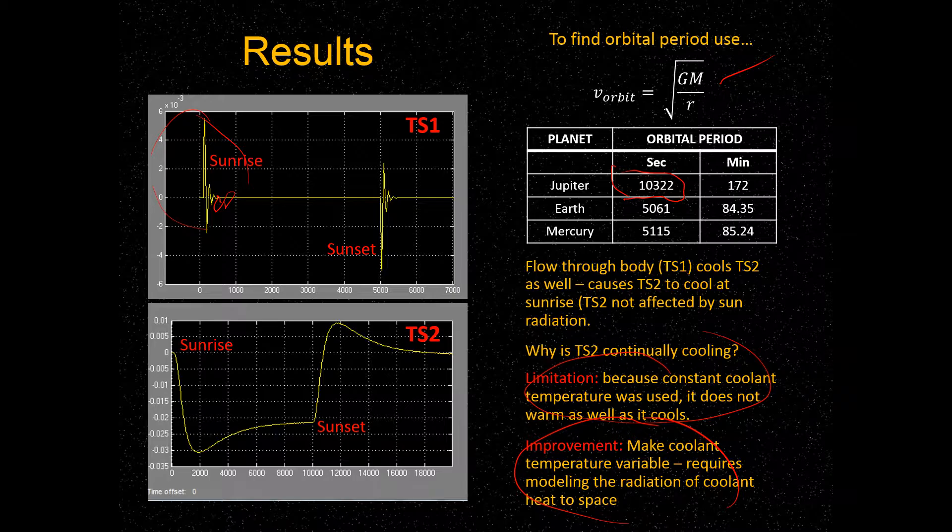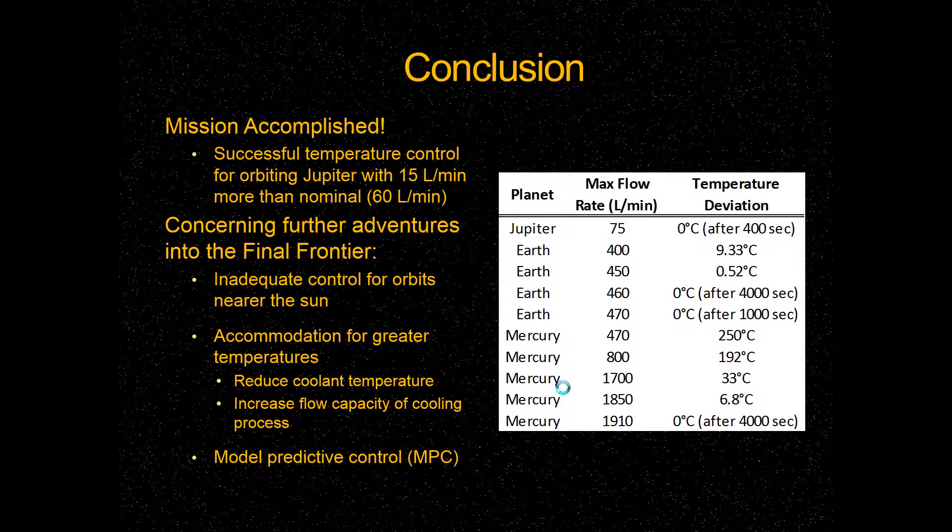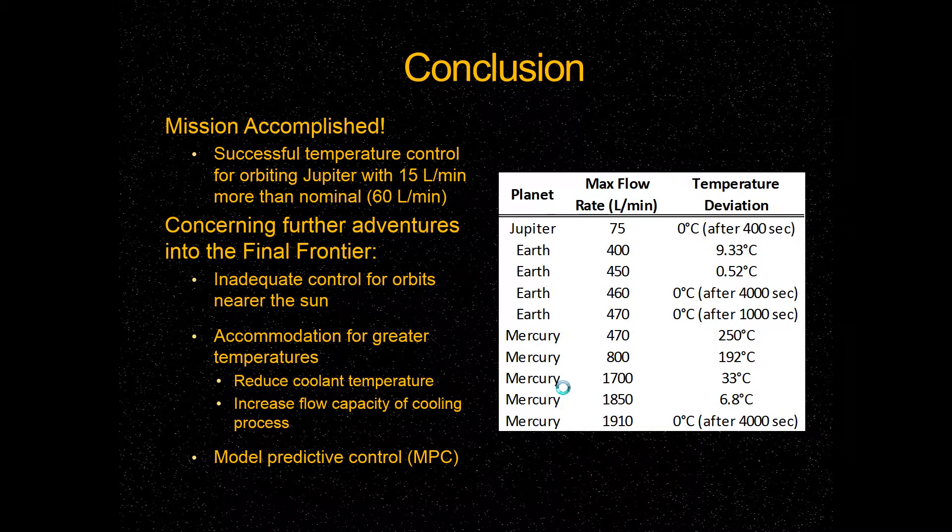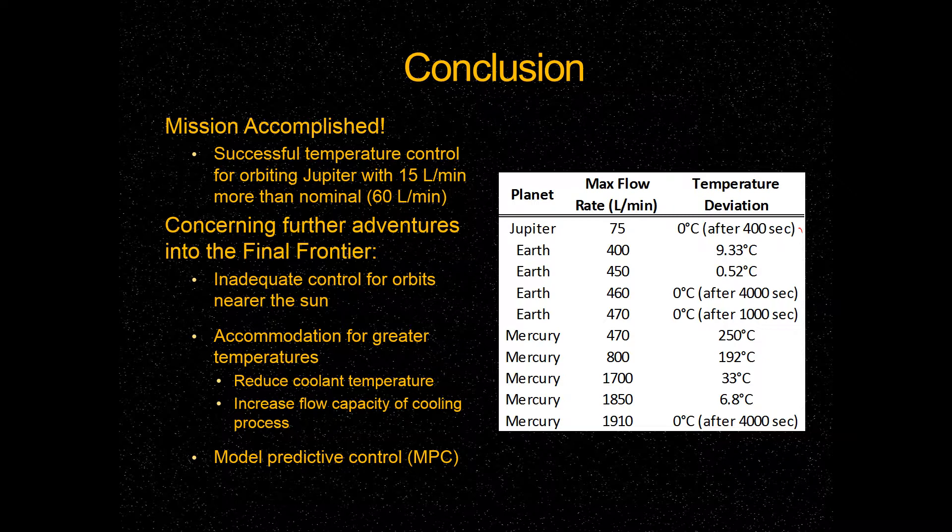As Ben said, we were able to accomplish our objective, and we were successful in controlling the temperature within a tenth of a degree. And you can see right here, that was within 400 seconds, after 400 seconds. And our nominal flow rate was 60 liters per minute, but to reach the results on the previous slide, we used 15 liters per minute more than the nominal flow rate. And it was very successful in controlling the temperature.